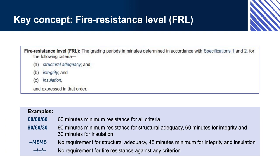For example, an FRL of 90/60/30 means that the material or form of construction will be structurally adequate — i.e., hold the load that it is carrying — for 90 minutes; it will maintain its integrity — i.e., hold its shape or form — for 60 minutes; and will insulate against heat from one side to the other for 30 minutes. FRLs are specified for many materials, elements, and assemblies in many different parts of the NCC. For example, in Volume 1, they are specified in Sections C, D, E, G, and I, as well as in the state and territory appendices and schedules.